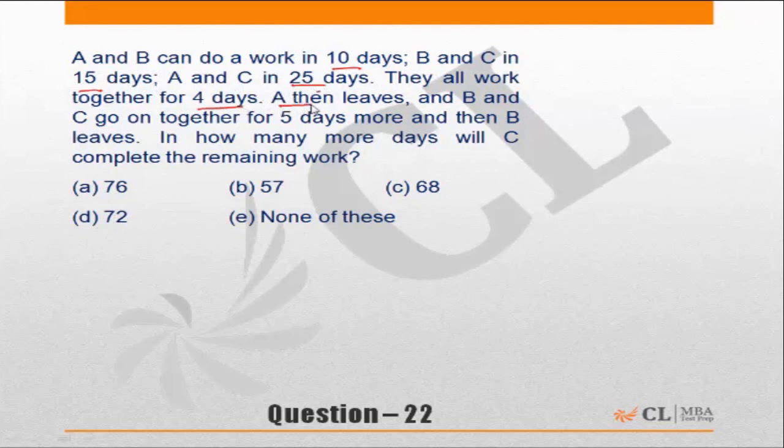They all work together for 4 days. A then leaves, and B and C go on together for 5 days more. Then B leaves. In how many more days will C complete the remaining work? So effectively, what the situation is: